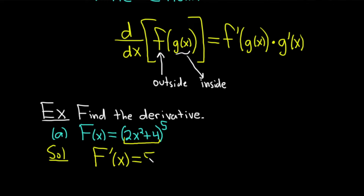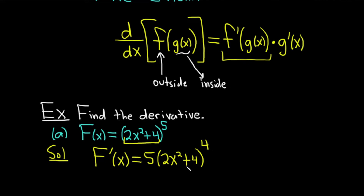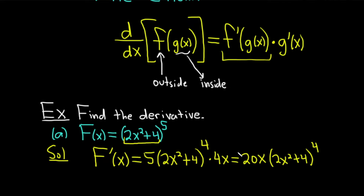We bring down the 5, leave the inside untouched. So 2x squared plus 4, subtract 1 from the exponent. At this point, the only thing we've done is we've taken the derivative of the outside — brought down the 5 and subtracted 1 from the exponent. That's the power rule. We left the inside untouched, so we've done the first part of our formula, which is f prime of g of x, times... Now we're going to multiply by the derivative of the inside. Our inside function is 2x squared plus 4. Using the power rule, we bring down the 2, so you would just get 4x. And then the derivative of 4 is 0. You basically just multiply the 4x and the 5, so you get 20x times 2x squared plus 4 to the fourth power.